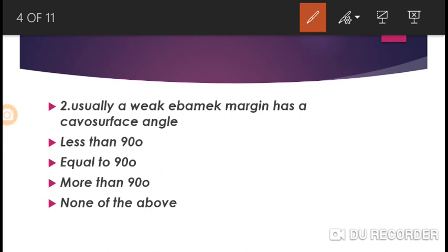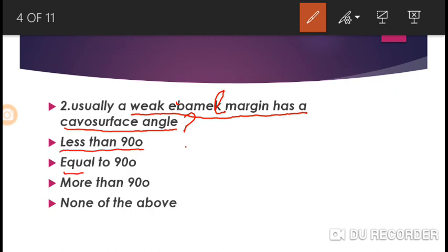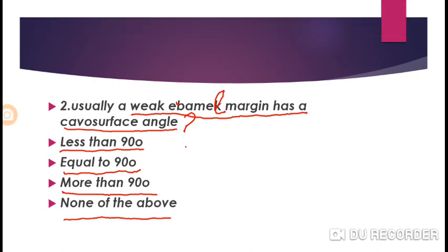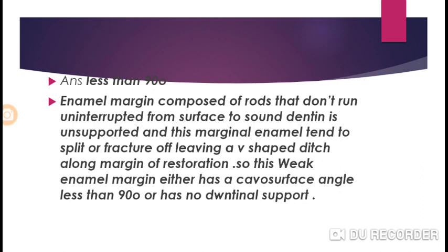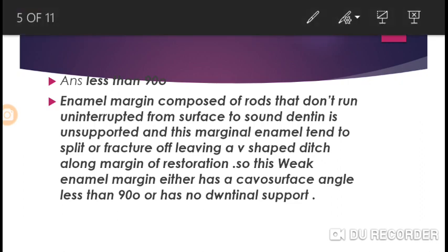The second MCQ: a usually weak enamel margin has a cavosurface angle of — the options are: less than 90 degrees, equal to 90 degrees, more than 90 degrees, or none of the above.